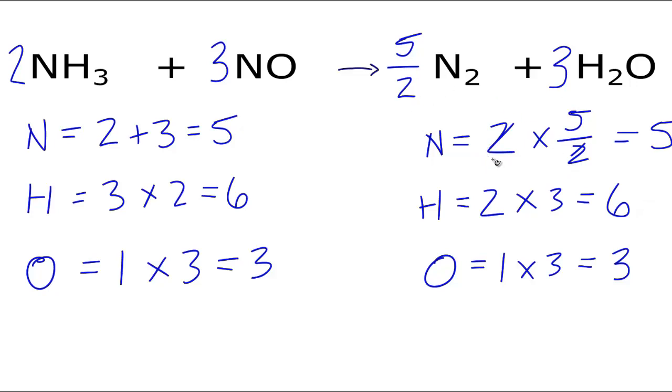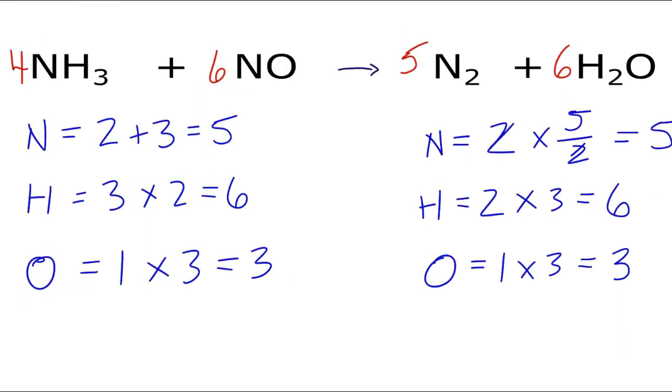Some people aren't comfortable having fractions in their equations. They'd like to use a whole number ratio. We can do that by multiplying the entire equation by two. So two times two, that would give us four. Two times three is six. Two times five over two, that gives us five. And two times three is six. So I've cleaned this up here for you, and you can see the final coefficients.